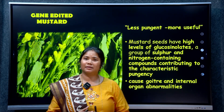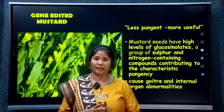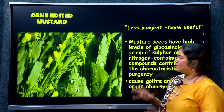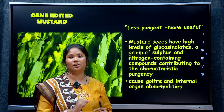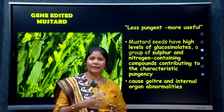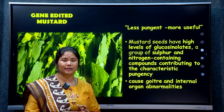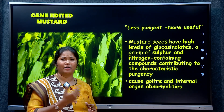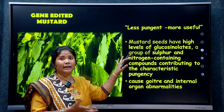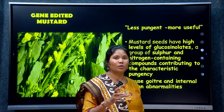Moving on to gene-edited mustard: mustard is a key oilseed crop in India, important for oil production, and is a rabi crop. The main growing regions are North-West India — Punjab, Haryana, and Rajasthan. However, mustard oil has a very pungent smell.